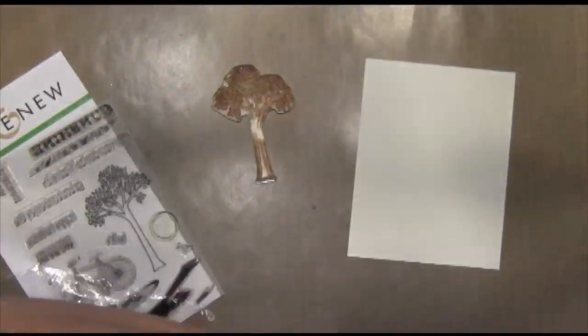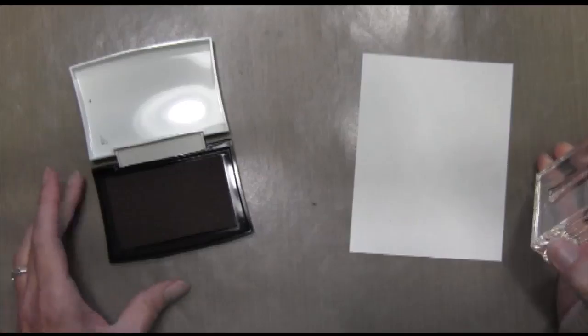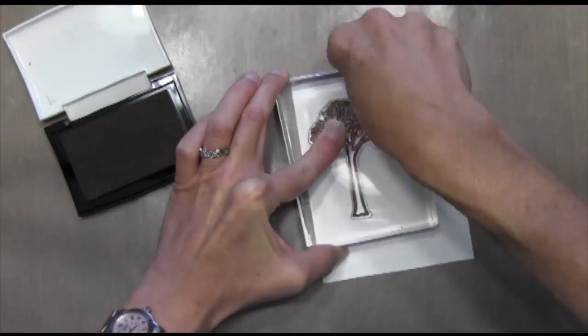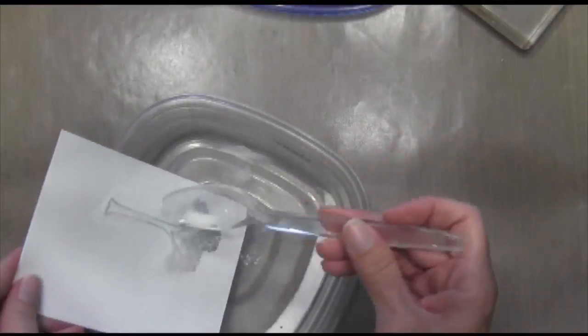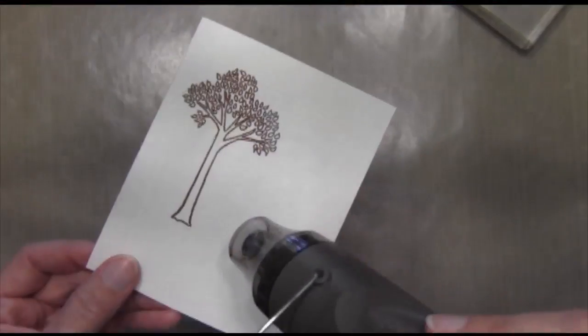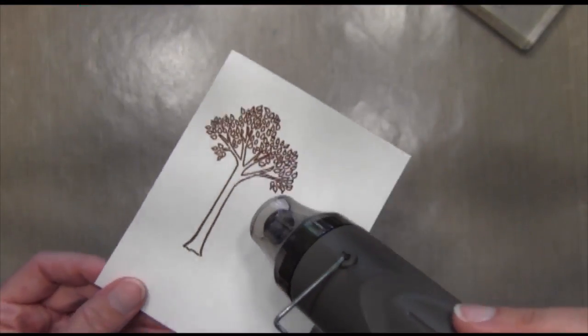So I'm going to start off by taking my tree and I'm going to ink it up with some sepia ink. This is pigment ink by Versafine. And because it's pigment ink it's going to allow me to clear emboss it and that will help my watercolor stay in the lines.